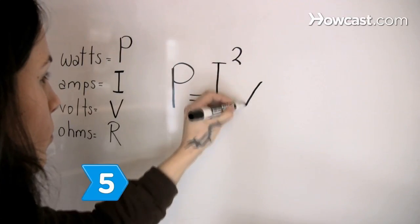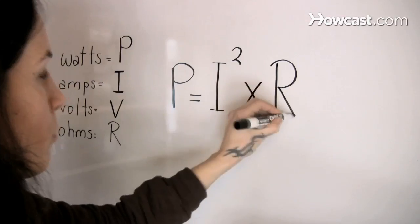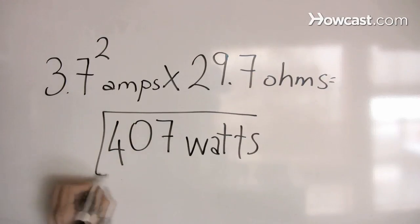Step 5. Obtain the wattage as the product of the square of current times the resistance. Resistance is measured in ohms.